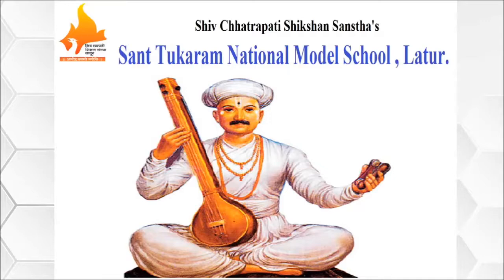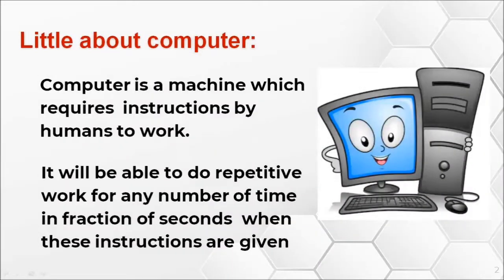Before going to the programming languages, let us first discuss what is meant by a computer. A computer is nothing but a machine — it cannot work or operate itself. It requires instructions to be given by humans. These instructions, given one after another to the computer, is known as computer programming, and nowadays it is known as computer coding. The computer can do repetitive work — which would be cumbersome for a human — many times in a fraction of a second when these instructions are given.